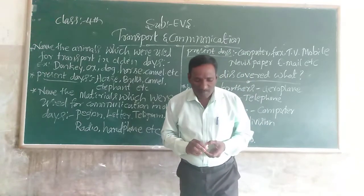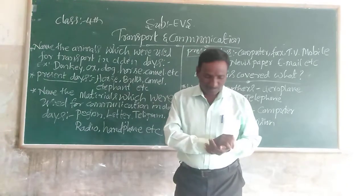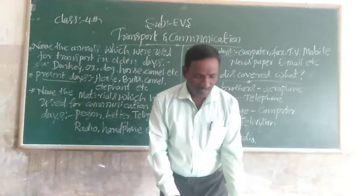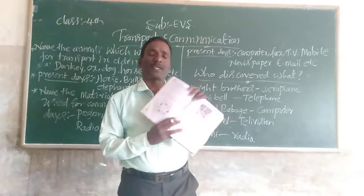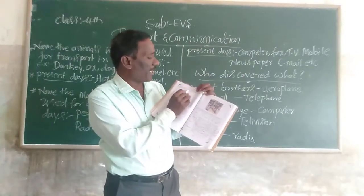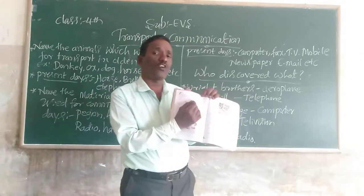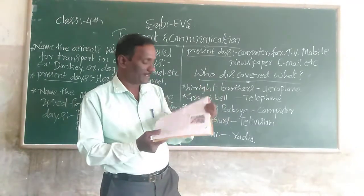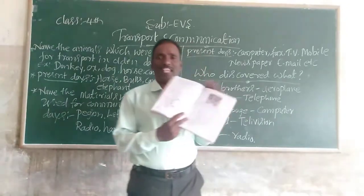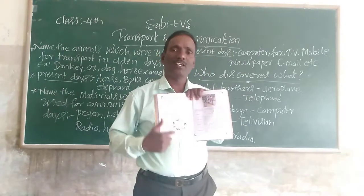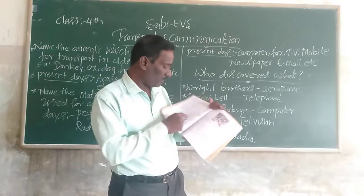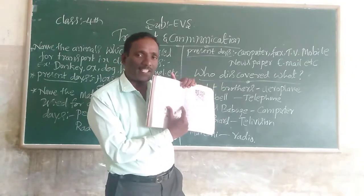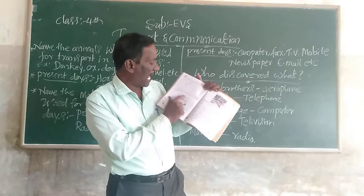Now I will write the names of animals which are used for transport in present days. You draw a picture in your textbook. Next, observe the animals which are used for transport in olden days or present days — draw a picture in your textbook. Next, observe the pictures carefully. Here is a central picture in your textbook. Read the explanation given and match with the correct picture.